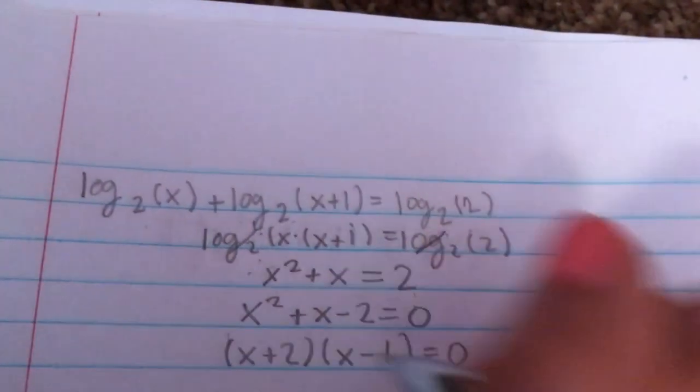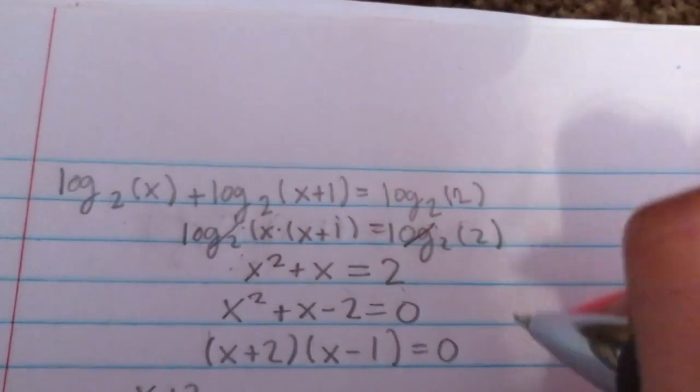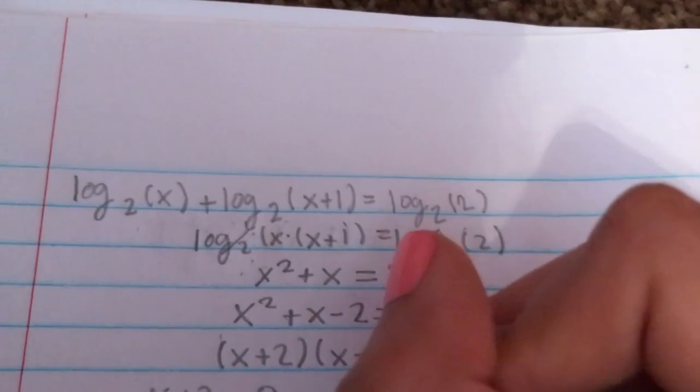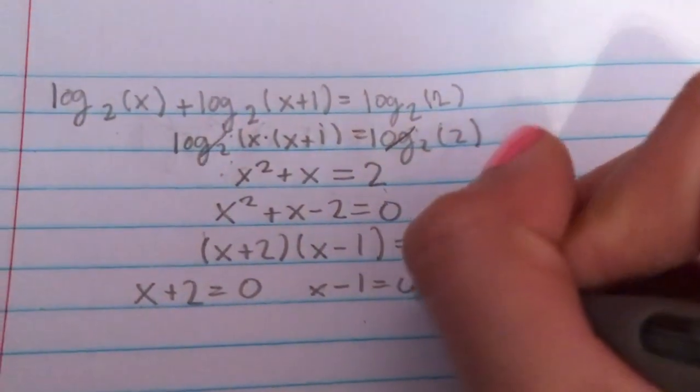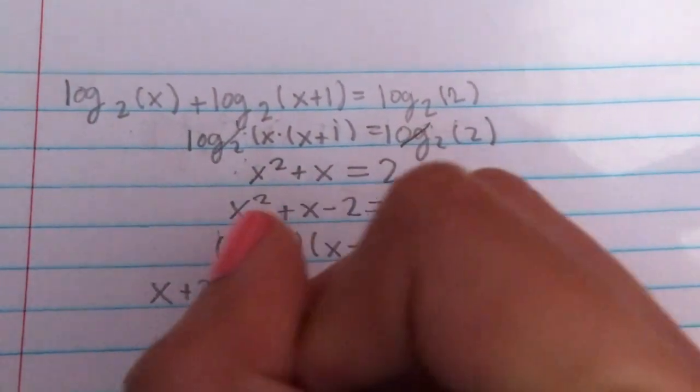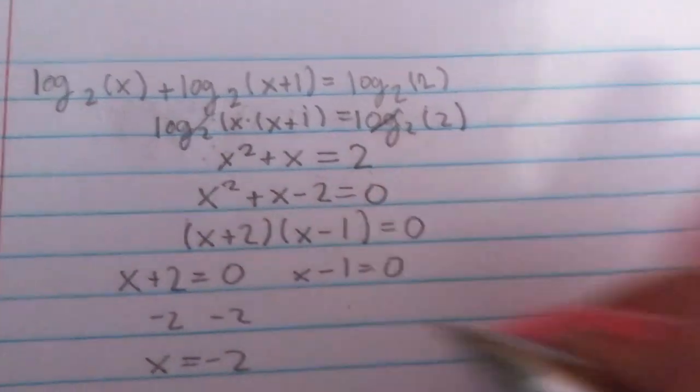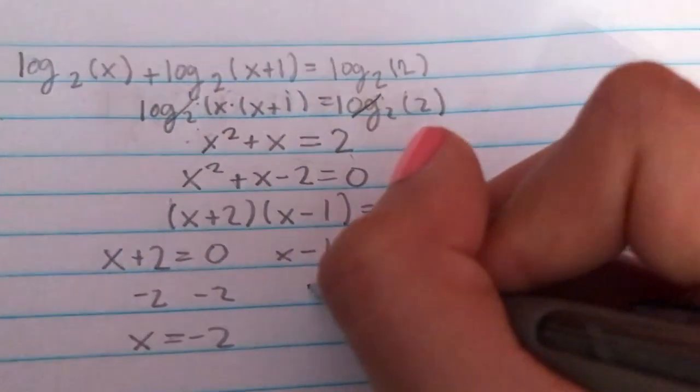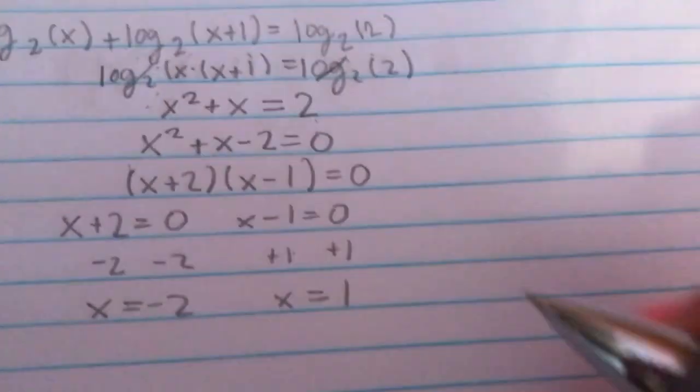So then the next thing you would do is you would separate them and set each one equal to 0. So then here you subtract by 2 and you get x equals negative 2. Now on this side you add 1 to give you x equal to 1.